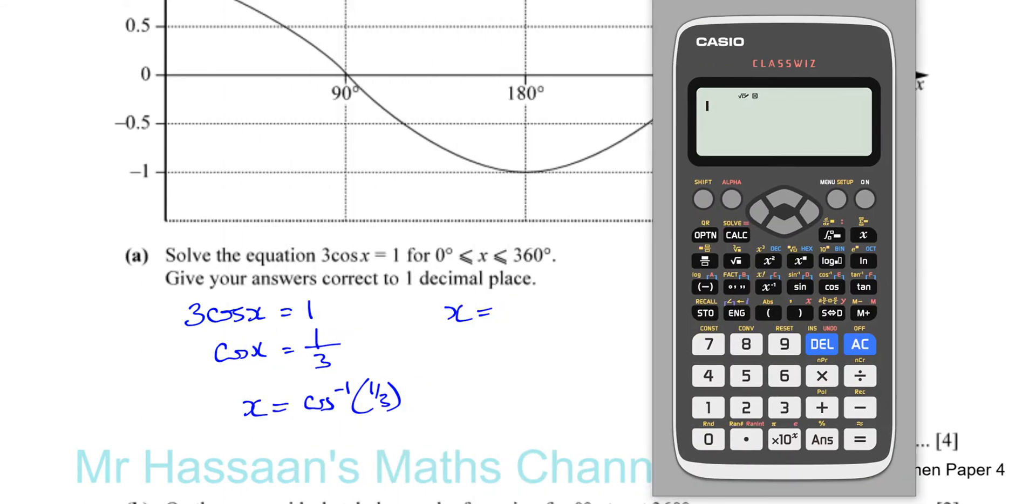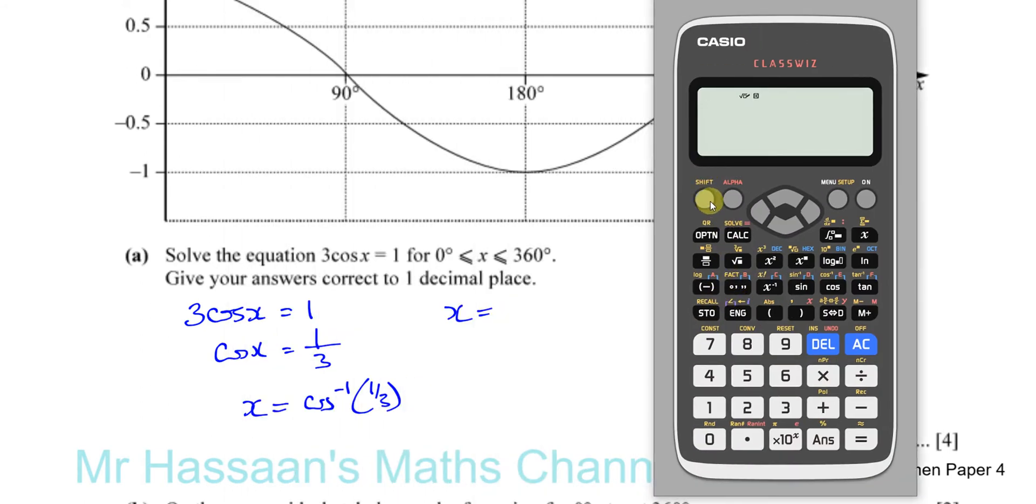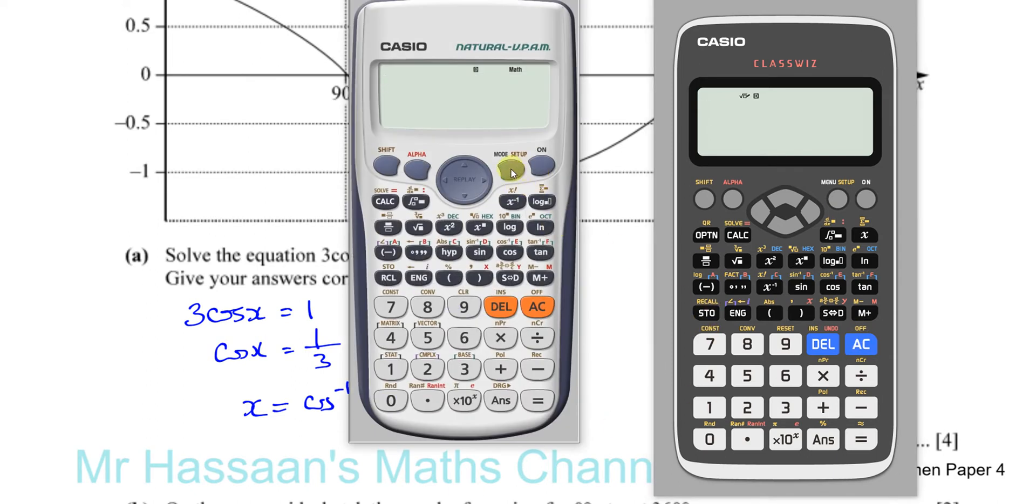We've got to make sure that we are in degree mode. We're going to press shift and menu and check that we are in degree mode. You'll know when you see there's a little D at the top of the calculator. If it says R or G, you must change it to degree mode. In this particular calculator, that's how it's done.